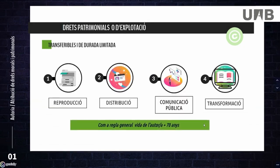How long does copyright last? According to Spanish legislation, in general terms it lasts the life of the author plus 70 years — or 80 years if the author died before 1987. In the case of works with more than one author, 70 years from the year in which the last surviving author dies.